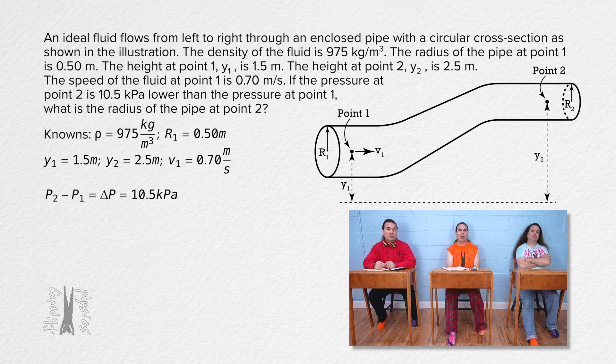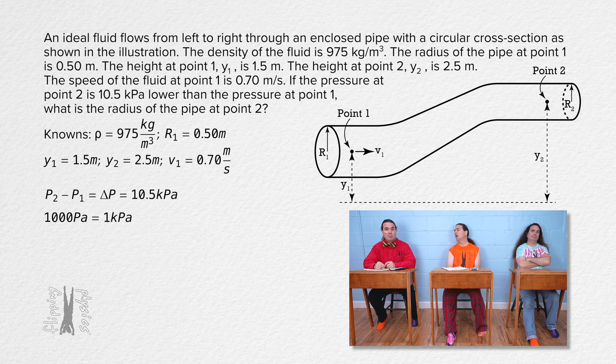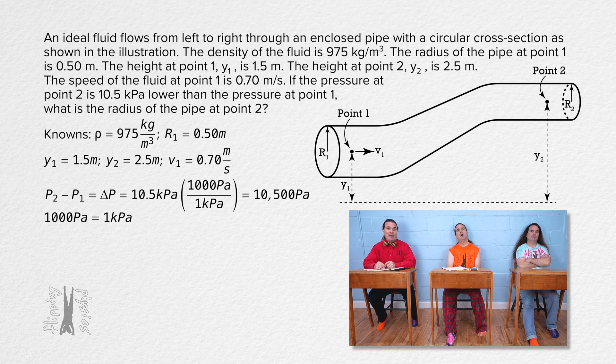equals 10.5 kilopascals. However, in order to work with pressure, we need pressure in standard physics units, which for pressure is pascals. So, because 1,000 pascals equals 1 kilopascal, multiply by 1,000 pascals over 1 kilopascal to get 10,500 pascals. And we are solving for the radius at point 2, so radius 2 equals question mark.